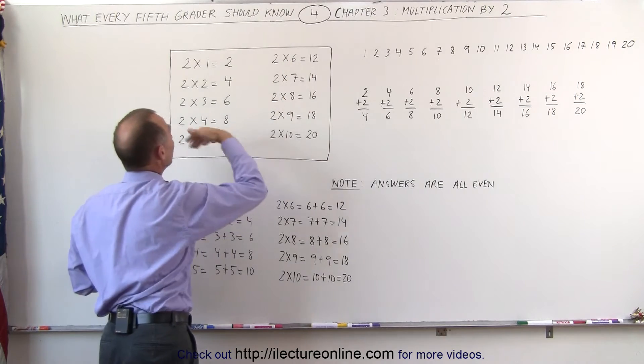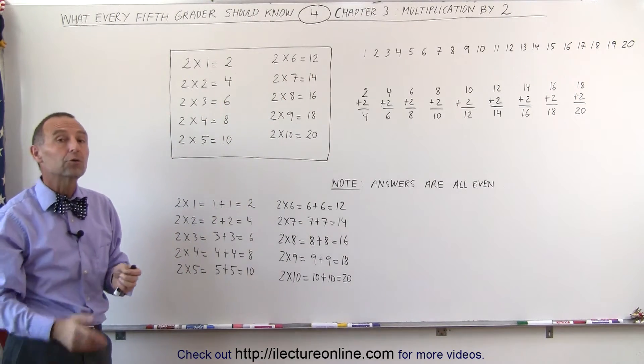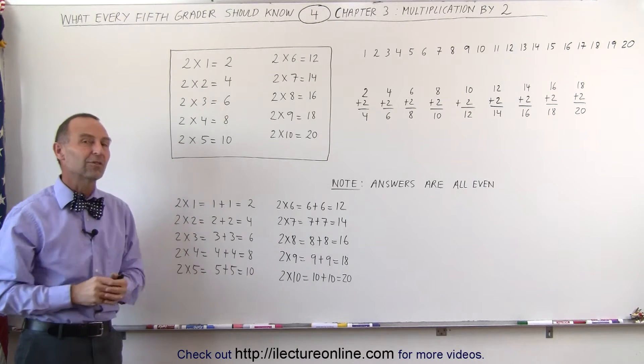If these were erased, we should simply be able to go 2 times 1 is 2, 2 times 2 is 4, 2 times 3 is 6, and so forth.